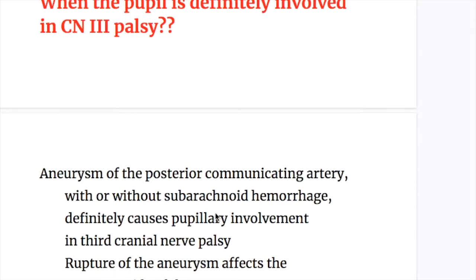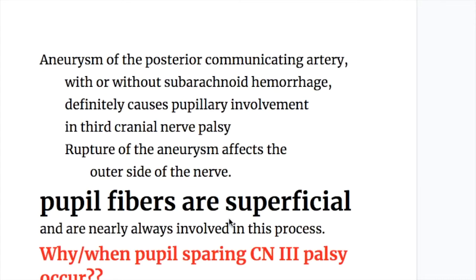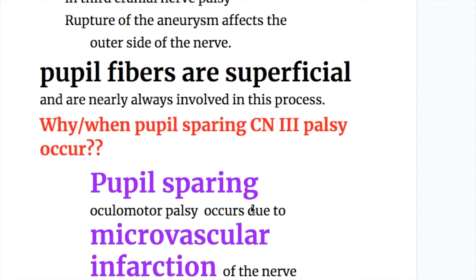When the pupil is definitely involved in oculomotor nerve palsy, an aneurysm of the posterior communicating artery, with or without subarachnoid hemorrhage, definitely causes pupillary involvement in third cranial nerve palsy. Rupture of the aneurysm affects the outer side of the nerve because pupil fibers are superficial and are nearly always involved in this process.